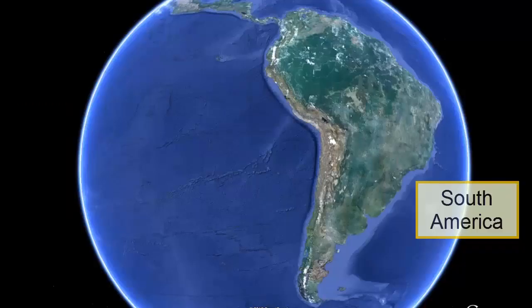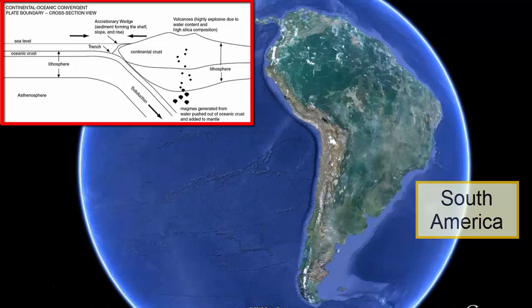Now that we know where the plate boundaries are, how can we determine what types of boundaries they are? We can measure their movement and we can study the surrounding topography, bathymetry, and geology. For example, what do we see in South America that shows us subduction is going on? The dark blue arc-shaped deep trench on the sea floor forms as the plate subducts.